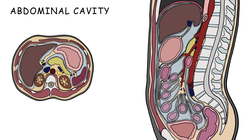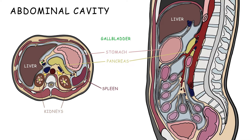The abdominal cavity contains the stomach, liver, gallbladder, pancreas, spleen, kidneys, suprarenal glands, small intestine, and most of the large intestine.